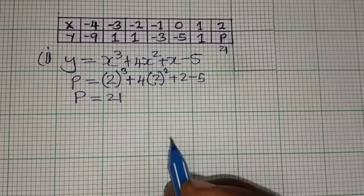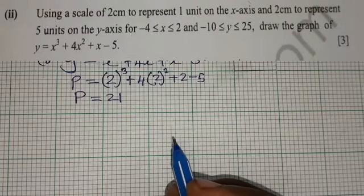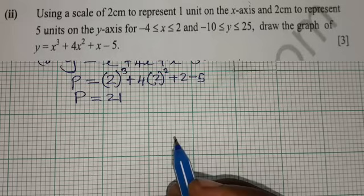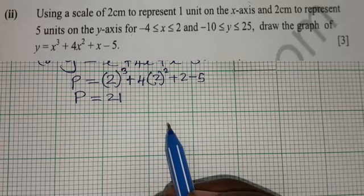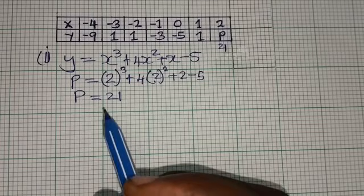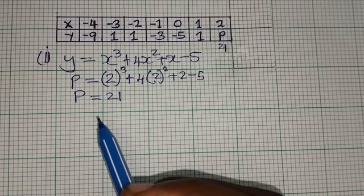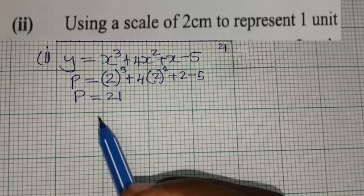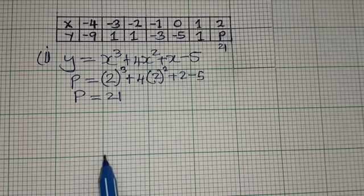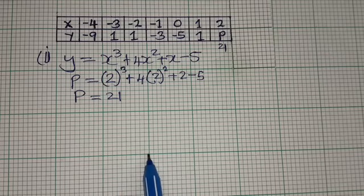The second part says: use a scale of 2 centimeters to represent 1 unit on the x-axis, and 2 centimeters to represent 5 units on the y-axis, for x values from negative 4 to 2 and y values from negative 10 to 25. The key point is that the big square from one line to the next is 2 centimeters, representing 1 unit.